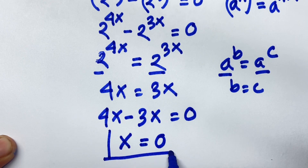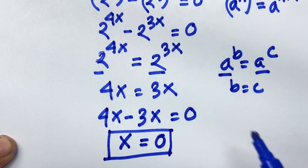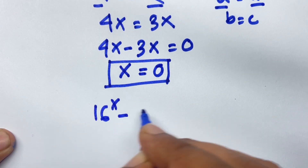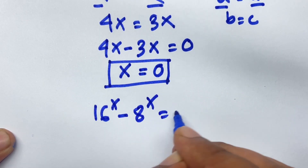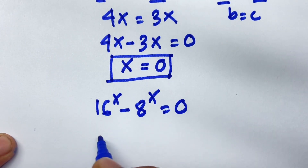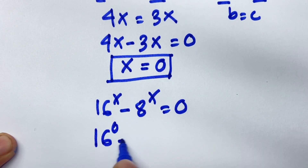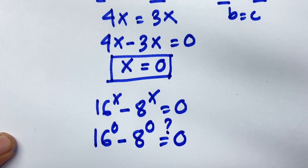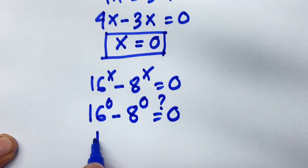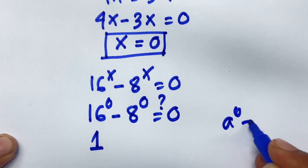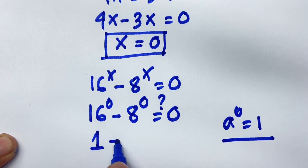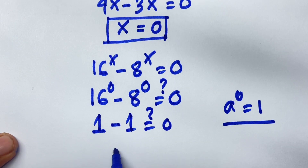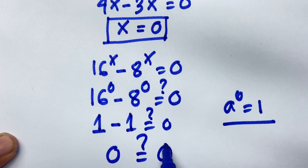So, our final answer is x equal to 0. Let's prove our equation: 16 power x minus 8 power x equal to 0. Now, we found x equal to 0. So, here is 16 power 0 minus 8 power 0 is equal to 0. Now, we know that 16 power 0 is equal to 1, because a to the power 0 equals 1, and 8 power 0 is 1. So, 1 minus 1 is equal to 0.